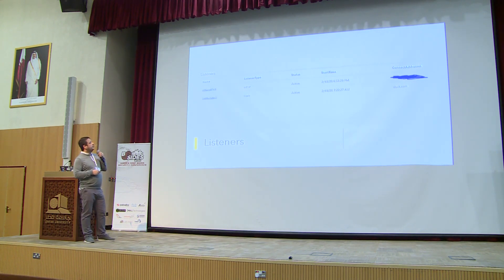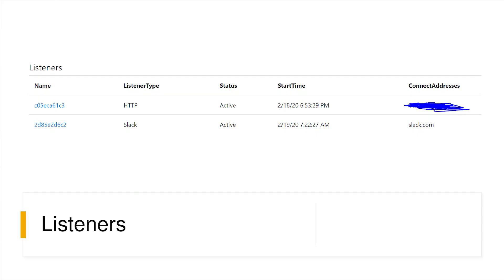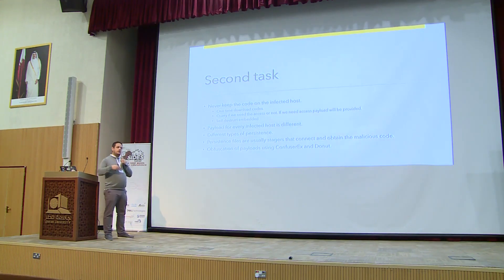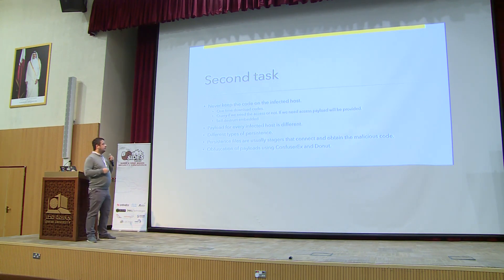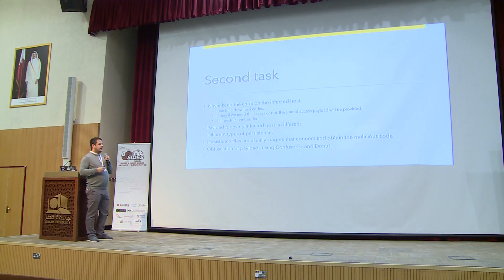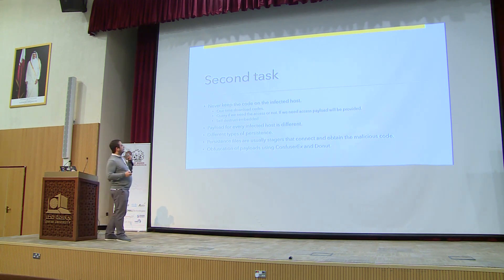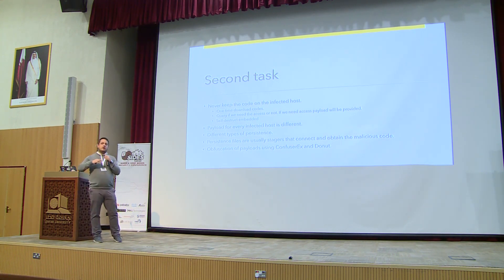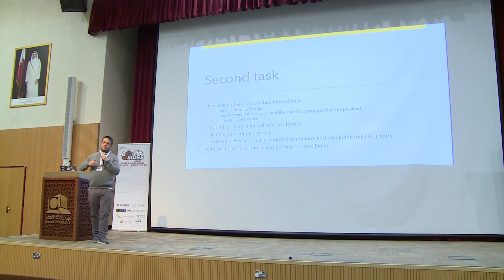Here you can see an agent using Slack and going to the Slack URL — very helpful. We never keep the code on the affected host; we only keep the small persistence file. We have one-time download codes, we query if we need access, and if we don't, it rests until called next time. The most important thing is to have self-destruct embedded in the environment. The payload for every host is different, which means we can easily track which host or agent the blue team is trying to investigate.